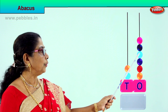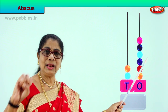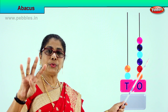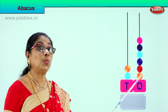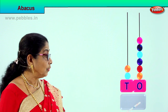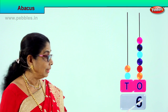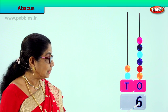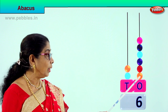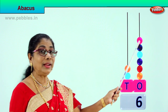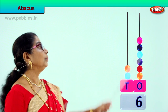Let's see how many ones are there: 1, 2, 3, 4, 5, 6. That is six ones, so we write the number 6 down here. You put number 6 because in the ones place we have only 1, 2, 3, 4, 5, 6.